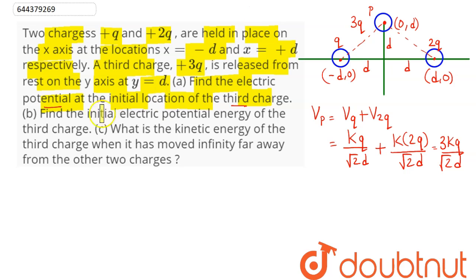Now, in the second part it says find the initial electric potential energy of the third charge. Now, we know the potential at point P, so the initial electric potential energy of the third charge we can say as Up is equal to q into V, that is 3q into Vp.